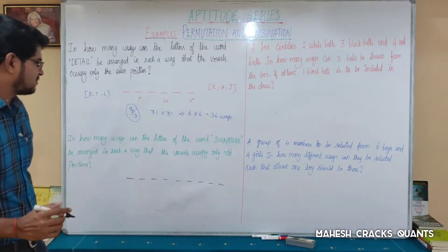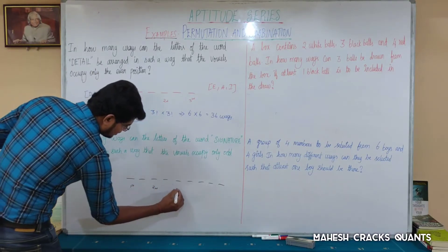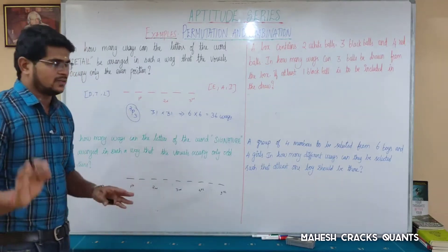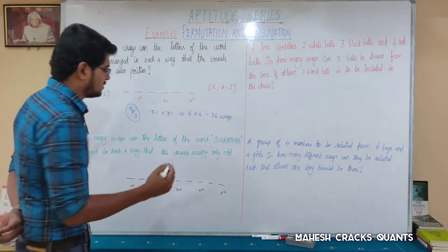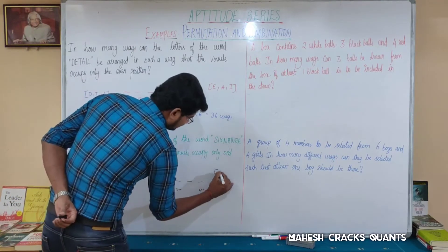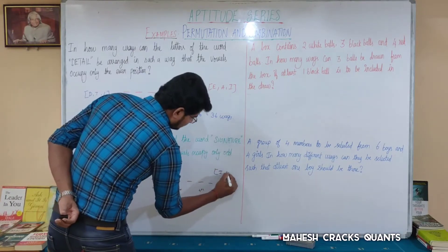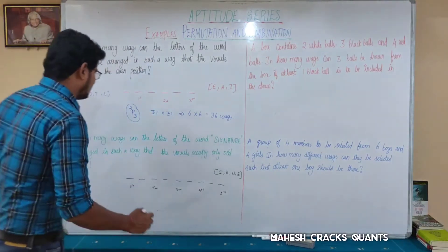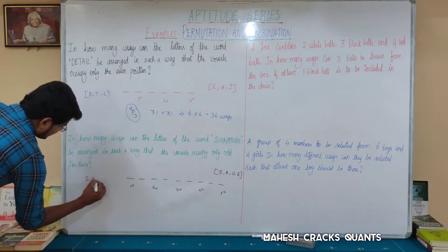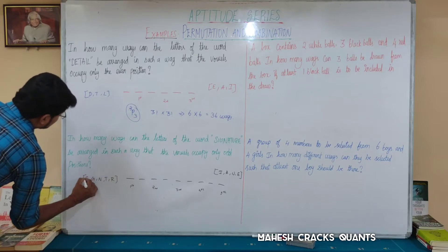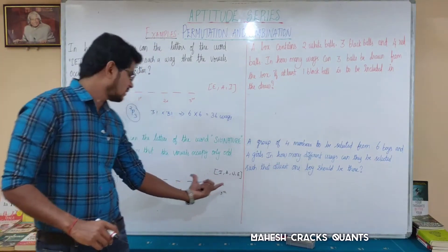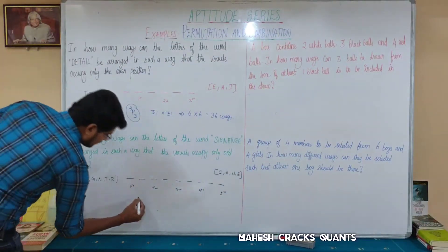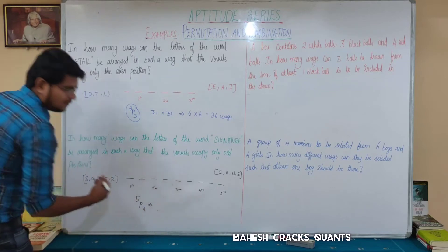The odd positions are 1, 3, 5, 7, and 9 — there are five odd positions. The remaining are even positions. Now we check how many vowels are in SIGNATURE: I, A, U, and E — four vowels. The remaining letters are G, N, T, and R, plus one more — five consonants total. We have four vowels to place in five odd positions, so that's 5P4.